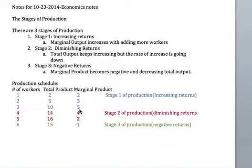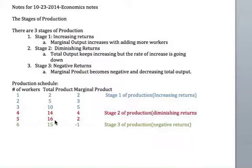When you move into stage two, everything is still increasing but the rate of increase is going down. With the fourth worker, total product is fourteen and marginal product is only four — beginning to go down in rate. Add a fifth worker and total product is sixteen, with marginal product of only two — you've gained just two more products by end of the day.